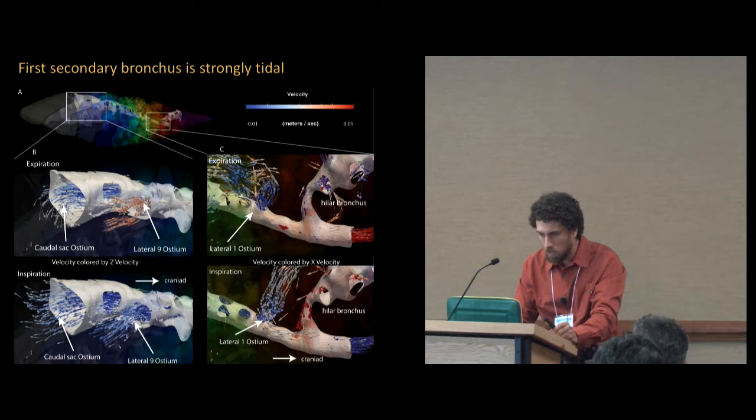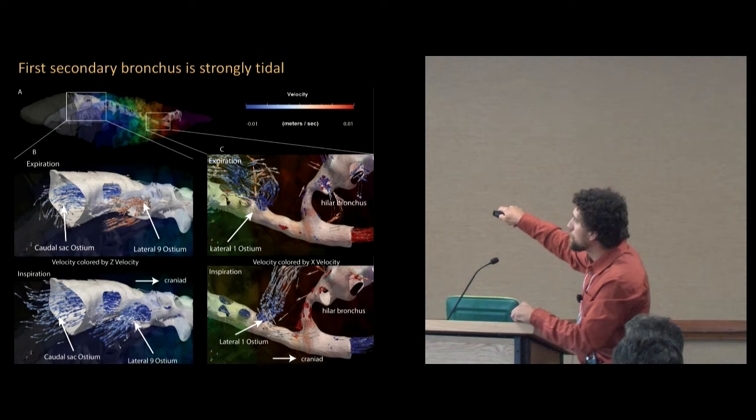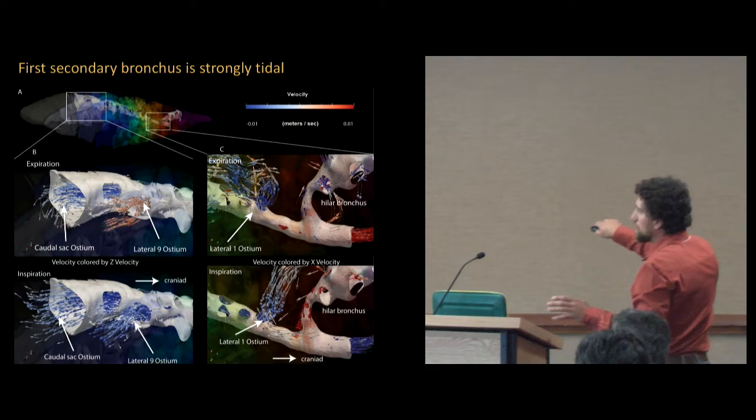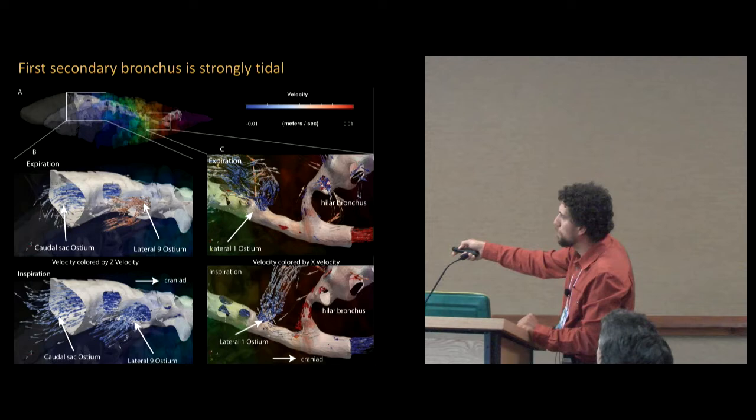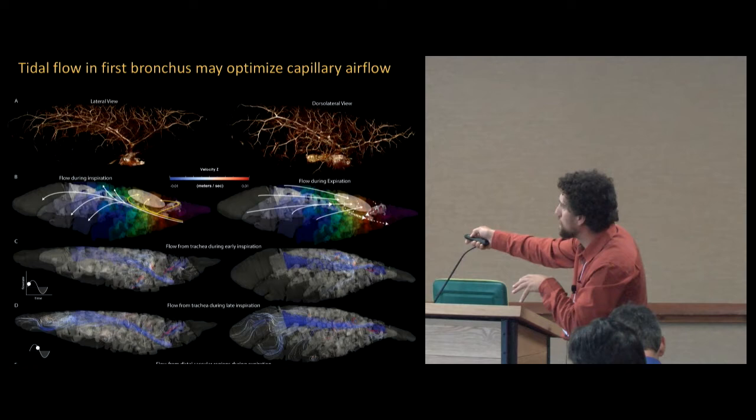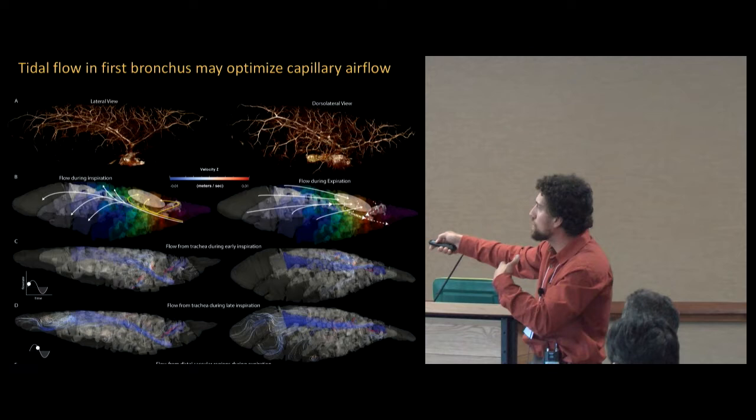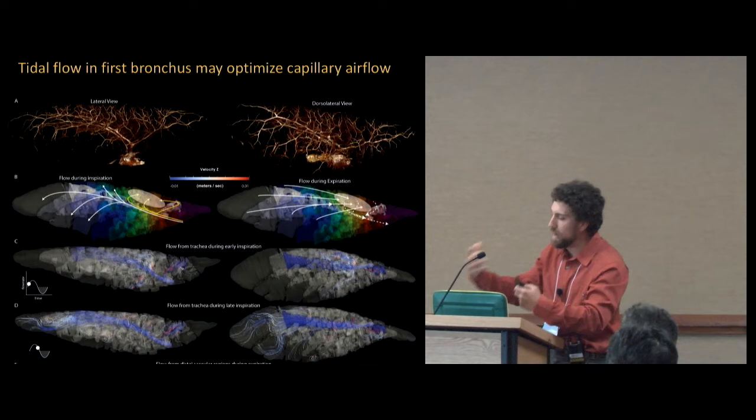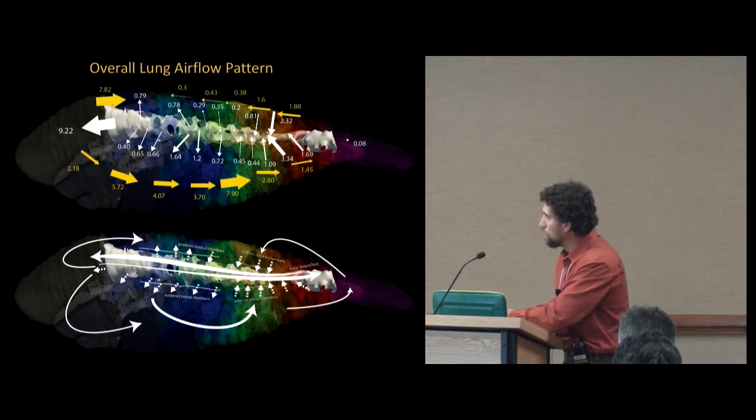The first secondary bronchus is really tidal. That's not like any of the other animals we've studied where the first one seems to be unidirectional in every species. But in this animal, the first tube takes air in and then takes air out the same way. That might be a specialization to maximize ventilation of all the capillary beds at the top of the lung. If you've got fresh air getting dumped into that region, especially during small breaths, it wouldn't have to work its way all the way around from the whole back of the lung.